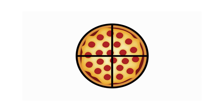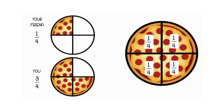Here's a pizza cut into four equal parts. Four is the denominator — it tells us how many pieces the whole pizza is split into. Let's say your friend ate one-fourth of the pizza and you ate three-fourths. Which is more? We can see that three-fourths is more than one-fourth because three parts are more than one part. So you ate more than your friend.